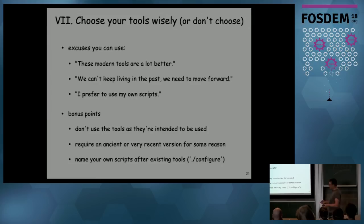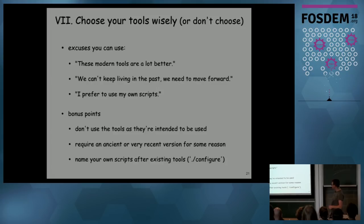Excuses you can use: 'Modern tools are a lot better, so throw away the old stuff — use whatever is the hype right now. We can't keep living in the past.' Or: 'I prefer using my own scripts or at least wrappers around tools I use.' If you do use tools, try to use them in the wrong way — require a very old or very new version so people can't just use whatever they already have. And if you write your own scripts, give them a name that looks familiar but is actually something entirely different.